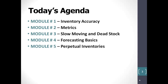Module 2 is titled Metrics, and what we'll discuss during that module is the necessity of determining inventory accuracy by counting things, not dollars. Module 3 is titled Slow Moving and Dead Stock, and, obviously, what we'll discuss there is the stuff that just sits in our stock rooms day after day, week after week, and, for some of us, year after year.